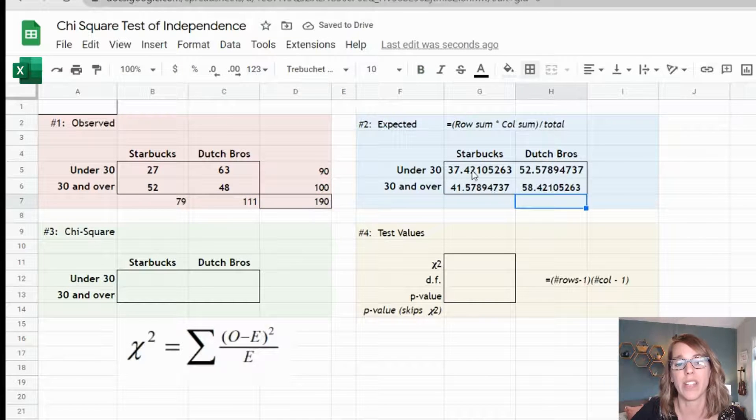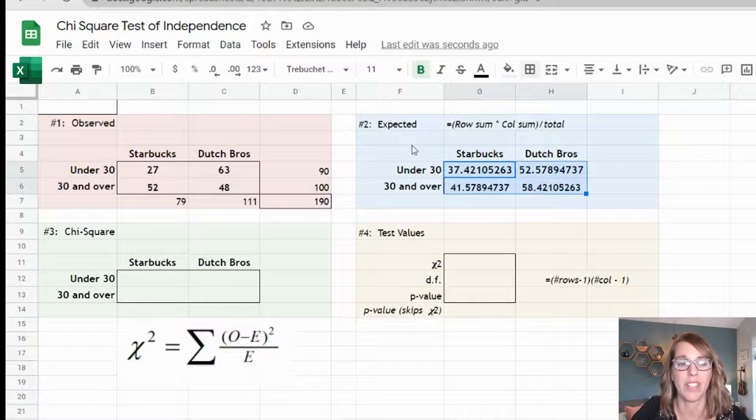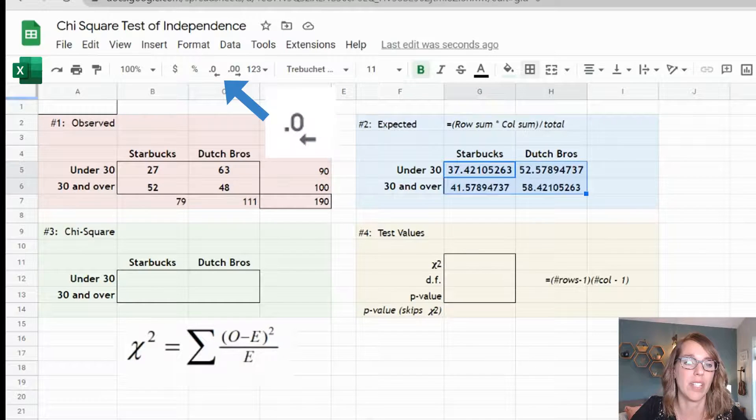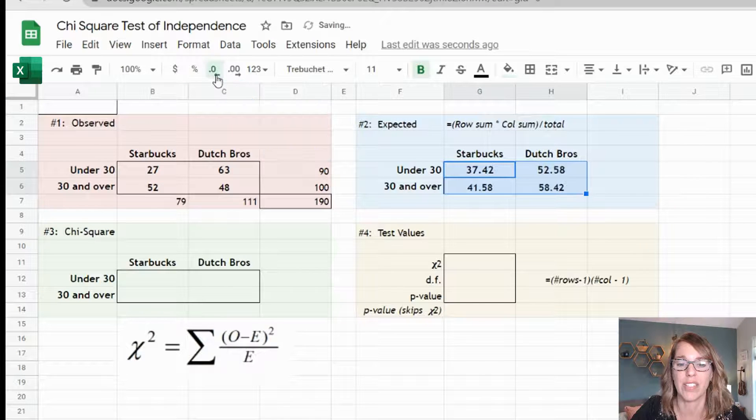I really just want one additional decimal place. So I can click, drag and hold over all of these cells and then use the decrease decimal icon here until I get just a single decimal place.